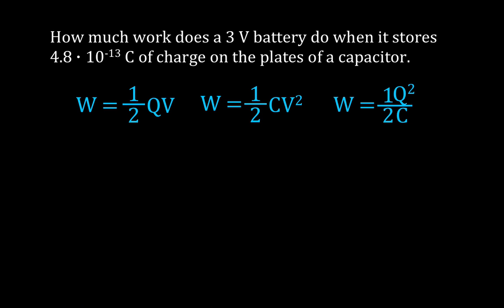The first one is this: How much work does a 3 volt battery do when it stores 4.8 times 10 to minus 13 coulombs of charge on the plates of a parallel capacitor? Now these are the three equations we had which we derived. You can see here we have voltage and we have charge. We want to calculate work and this first equation has the voltage and the charge in it. So this is the equation we're going to use.